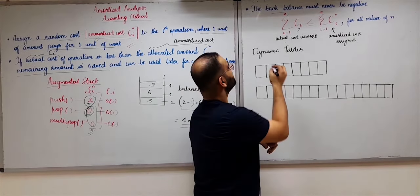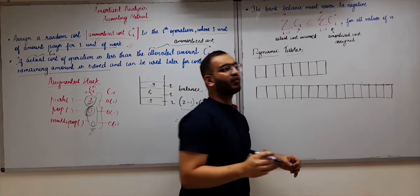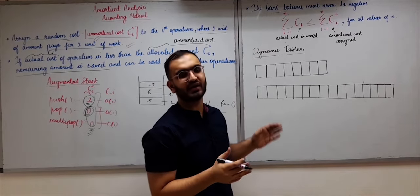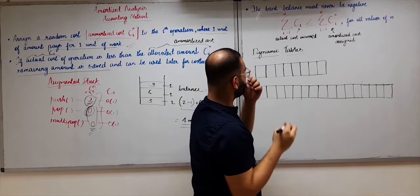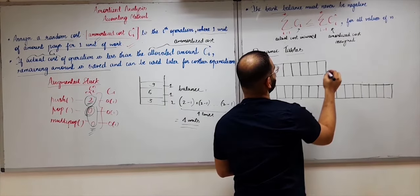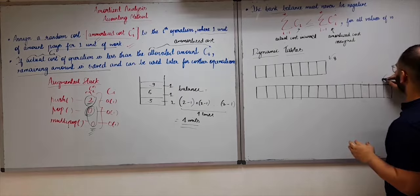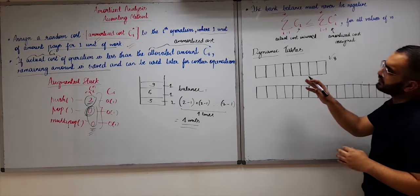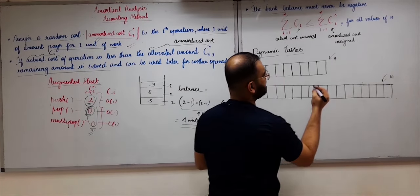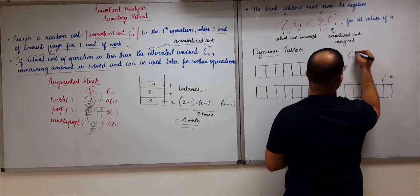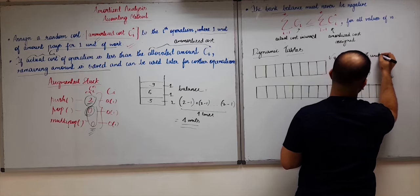Now let us revisit the dynamic tables. I have explained clearly how dynamic tables work in the previous video — please go watch it if you haven't. Let us consider a dynamic table of size 8 and another of size 16, and assign an amortized cost of 3 units for the insert operation.